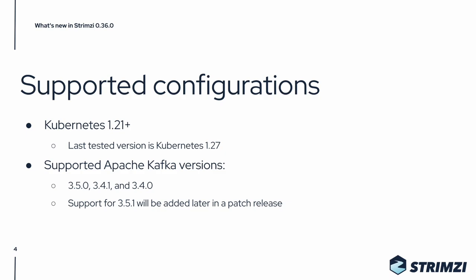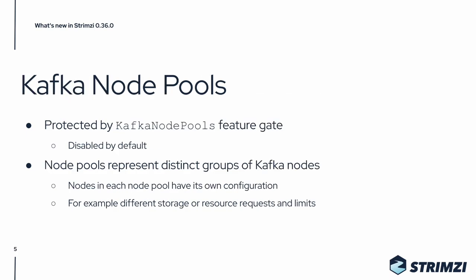One of the main new features in this release is Kafka Node Pools. Kafka Node Pools allow you to create different groups of Kafka nodes with different configurations, for example different storage or resource and request limits. This feature is currently protected by the Kafka Node Pools feature gate and is disabled by default, but you can enable it and give it a try.